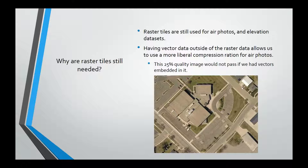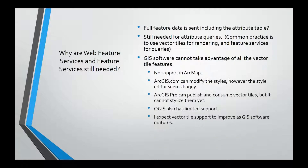Another interesting thing: with ArcGIS Online, vector tiles cost 1/200th of the price compared to hosting feature services. We still need raster tiles beyond vector tiles because they're still used for air photos and elevation data sets. Having vector data outside of the raster data allows more liberal compression — for example, I can compress air photo images down to 25% quality and people won't notice it, but you would notice issues if the actual streets and line work were in there as well.